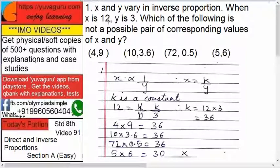If x and y vary in inverse proportion, when x is 12, y is 3, which of the following is not a possible pair of corresponding values of x and y? The options are (4,9), (10,3.6), (72,0.5), or (5,6).